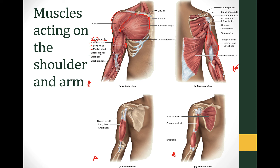The biceps means two heads of the arm, and you can see both heads on the anterior view. The biceps is an antagonist to the triceps — it flexes the forearm, originating on the scapula and inserting on the radius. Additional muscles include the brachioradialis, which supports the biceps brachii in flexing the arm, and the brachialis, both of which help in flexing the forearm.